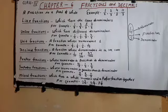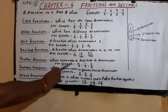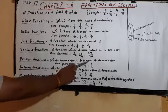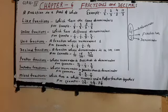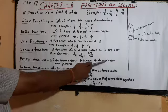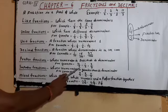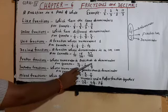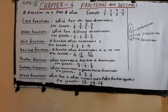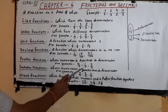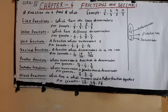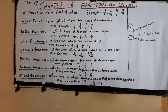Next, proper fractions — whose numerator is less than its denominator. For example, 4 by 5, 1 by 2, 3 by 7. You can see all numerators are less than the denominator. So, a fraction whose numerator is less than its denominator is called a proper fraction.